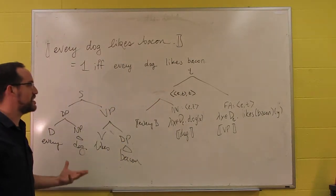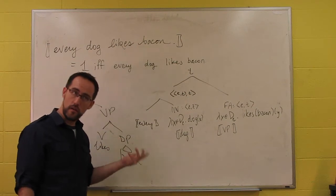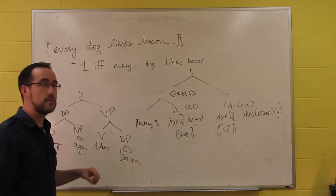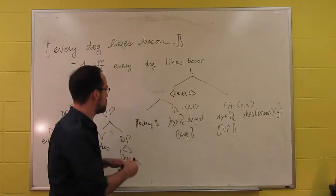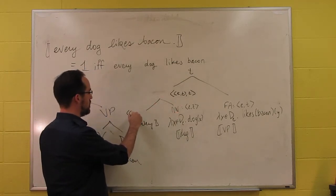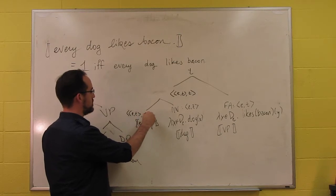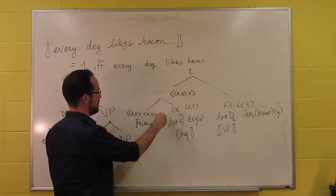That leaves ETT, which is what we got with existential quantification. If that's the case, then every will need to be a function of type ET, ET, T.